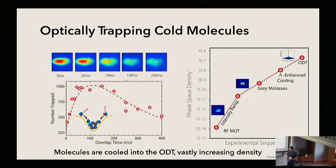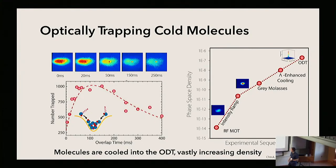Once we have these cold molecules, we can then optically trap them. We see that this lambda-enhanced cooling actually works in the presence of the optical trapping light, because we can load the molecules from the molasses into this dipole trap and further increase the density. Basically, each of these steps is just to gain both density and phase-space density of our molecules.